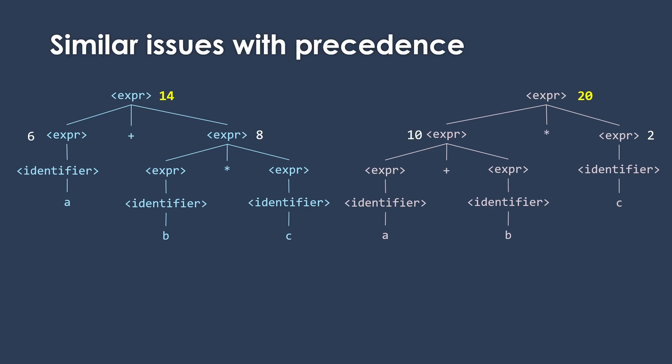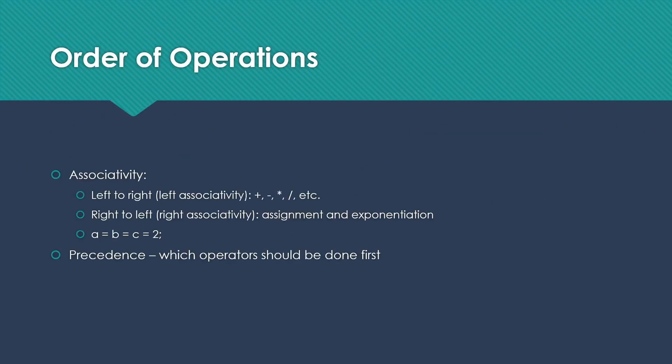We have similar kinds of issues when we think about precedence. The grammar that we have doesn't provide any way to distinguish and tell what the precedence should be of the operators. So both of these trees are valid trees for A plus B times C. Yet again, they get different results because in one case we do the multiplication first as we would expect, but the one that does the addition first is perfectly valid. So when we're creating grammars for things like this, we need to be considering the order of operations.